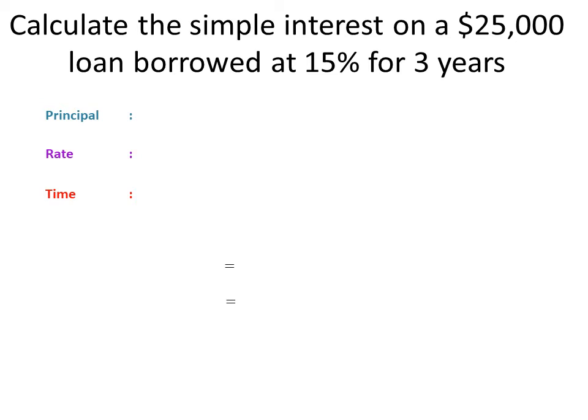Calculate the simple interest on a twenty-five thousand dollar loan borrowed at fifteen percent for three years. I suggest you pause the video, have a go on your own, then play it to see if you're on the right track. Let's identify the three quantities: the principal is 25,000; the rate is 15 percent, which you can write as a fraction or decimal; and the time is three years. Remember the formula — you must remember the formula, students.